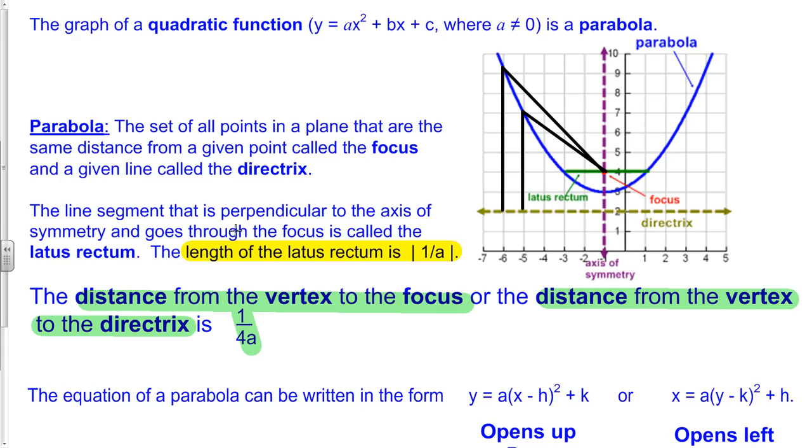The line segment that is perpendicular to the axis of symmetry, so going horizontal in this case, and goes through the focus is called the latus rectum. So this green line here goes through the focus perpendicular to the axis of symmetry. The length of that line is 1 over a. So if we ever need to calculate that, we can look at our a value and have 1 over a give us the length of that line.